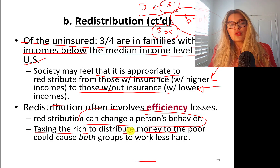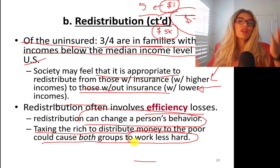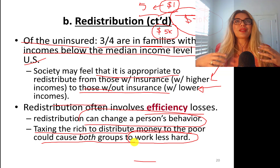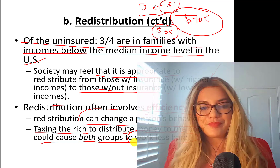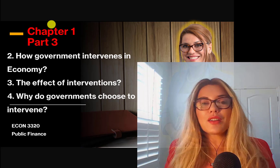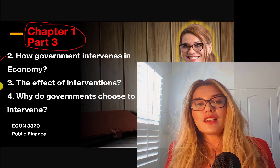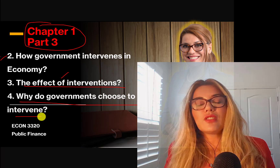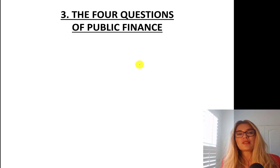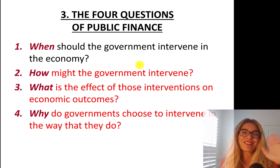Taxing the rich to redistribute money to the poor could cause both groups to work less hard — every policy has pros and cons. That's a behavioral response. So we are done with Part 2. I'll see you in Part 3, where we'll talk about the other important questions in public finance: how does the government intervene in the economy, what's the effect of these interventions, and why do governments choose to intervene the way they do?